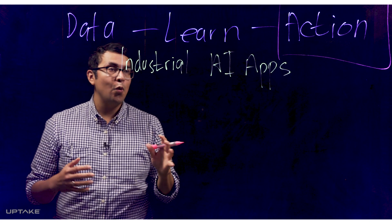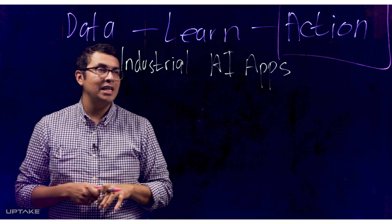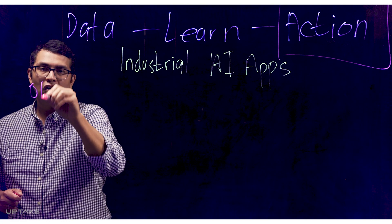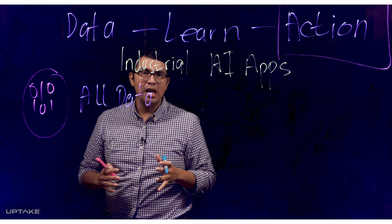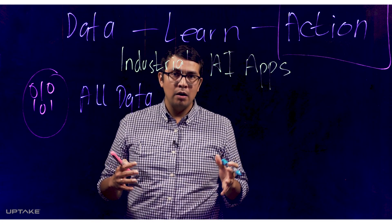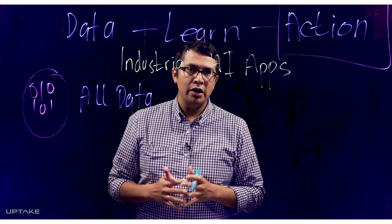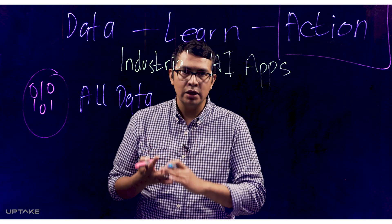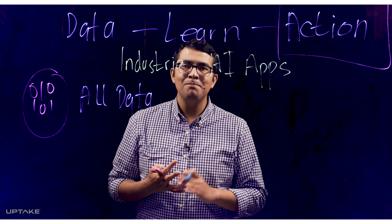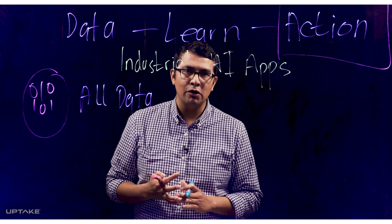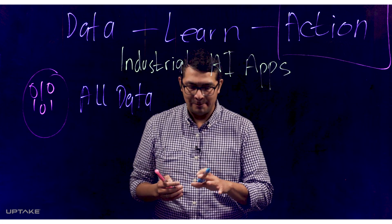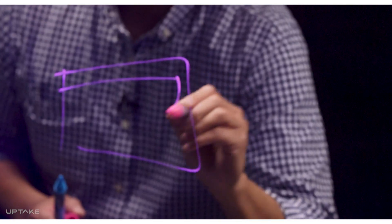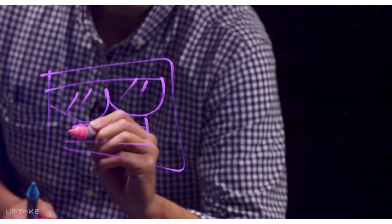There are a couple of characteristics we're going to look for as we start developing these applications. First is all the data that our customers care about. We want to bring into one application all the data sources that are going to help our customers make key decisions — that might be telemetry data, sensor data coming off their assets, maintenance record information, weather details, whatever that data source is.